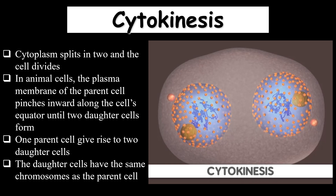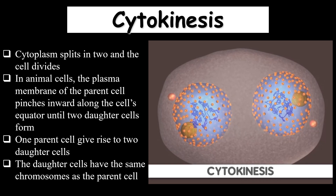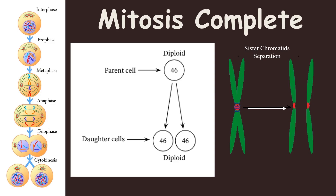The two daughter cells formed will have the same number of chromosomes as the parent cell. In mitosis, the daughter cells formed have the same number as the parent cell: 46 chromosomes (diploid). This parent cell with 46 chromosomes divides into two cells, each still having 46 chromosomes. This is diploid because the chromosomes are present in pairs — 23 pairs, or 23 sets of chromosomes, are present in the cell nucleus.